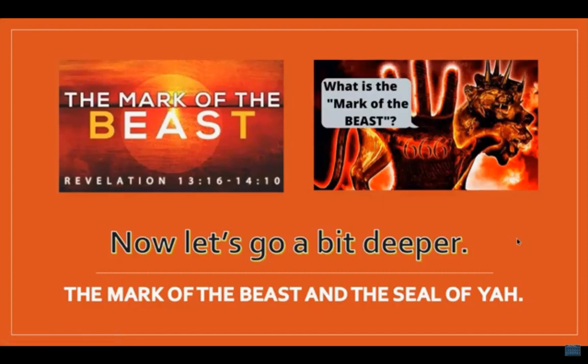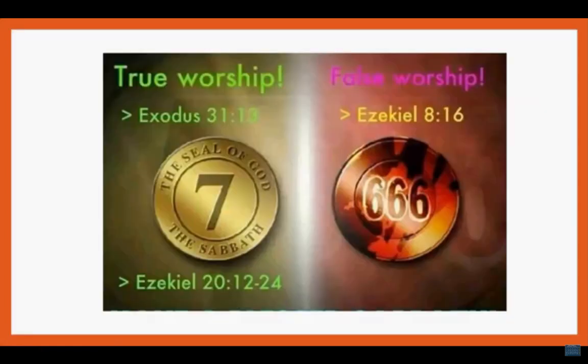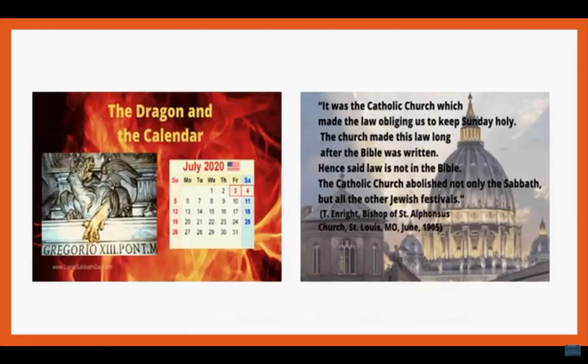Now let's go a bit deeper — the mark of the beast and the seal of YAH. True worship is the seal of YAH, as found in Exodus 31:13 and Ezekiel 20:12-24. False worship is described in Ezekiel 8:16 — where they had their faces to the east, worshiping the sun.